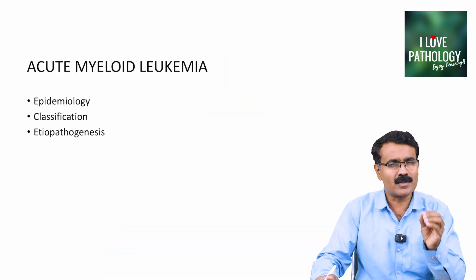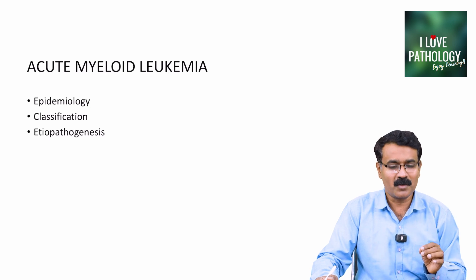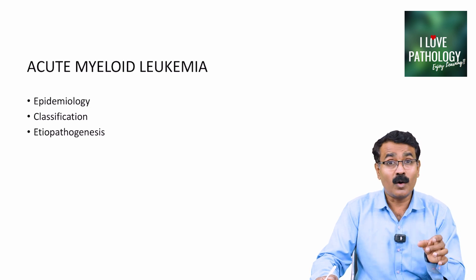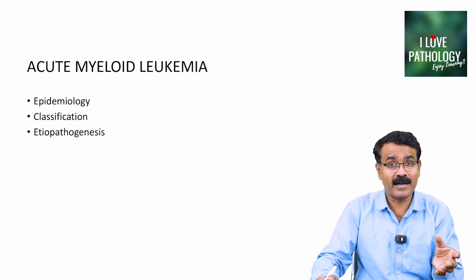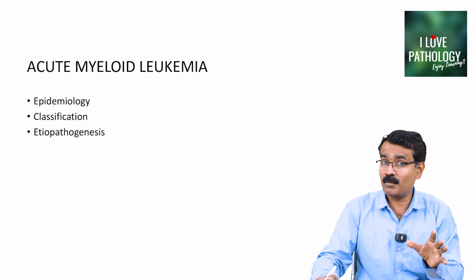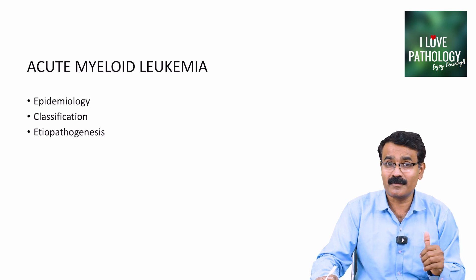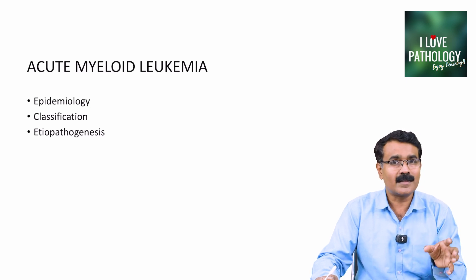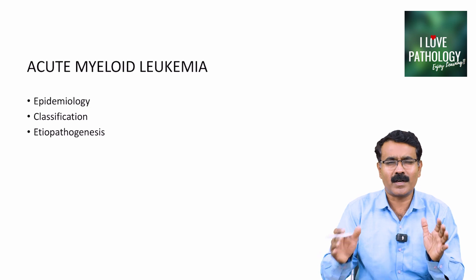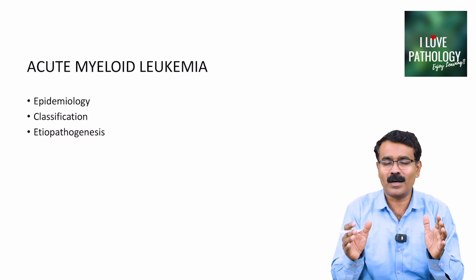In today's session, let's learn a very important topic in white blood cell neoplasm — that's acute myeloid leukemia. In this session, we will concentrate only on the epidemiology of acute myeloid leukemia, how acute myeloid leukemias are classified — I am talking about the recent WHO classification — and thirdly, etiopathogenesis of acute myeloid leukemia.